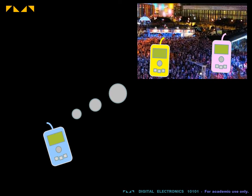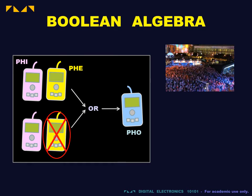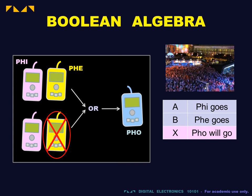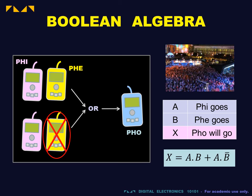We now consider the example of logic simplification seen in the previous video. 4 will go to the big party if phi goes and fair goes, or if phi goes and fair does not go. If X is the output — 4 will go — and A and B are the inputs — phi goes and fair goes — then the corresponding Boolean expression is: X is equal to A AND B OR A AND B-bar.